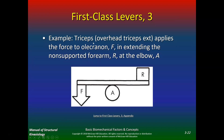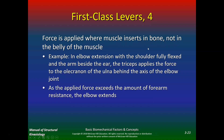The overhead triceps extension applies the force to the olecranon, extending the non-supported forearm with resistance at the elbow. Force is applied where the muscle inserts in the bone, not in the belly of the muscle. In elbow extension with the shoulder fully flexed and the arm beside the ear, the triceps applies force to the olecranon behind the axis of the elbow joint. Think of skull crushers — as the applied force exceeds the forearm resistance, the elbow extends.